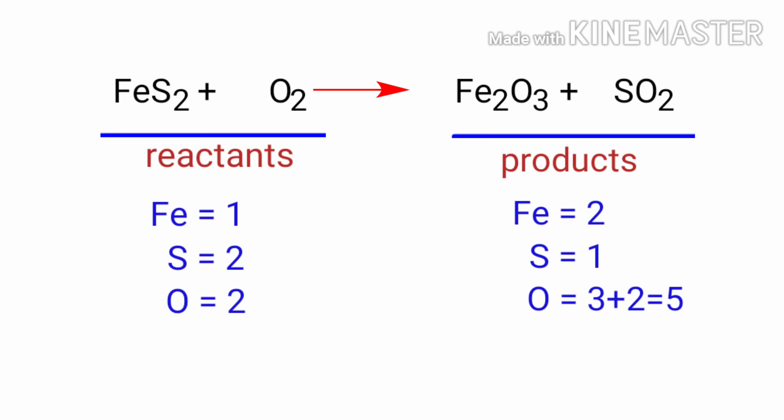To balance the chemical equation, we need to make use of coefficients. A coefficient is a number that we place in front of a chemical formula. In this equation, we need to balance the Iron atoms first. To do this, we need to put a coefficient of 2 in front of FeS2.